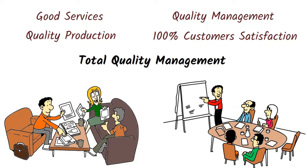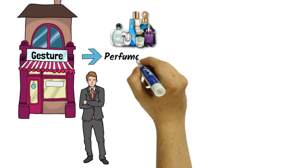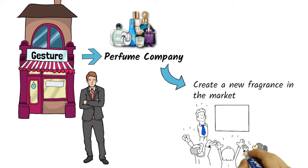To better understand this process, let's take an example. Let us assume there is a person named John who started a company named Gesture. This is a perfume company that has a goal to create a new fragrance in the market so the company can attract more customers and achieve its target and generate good revenue.